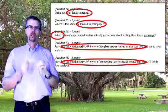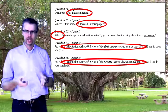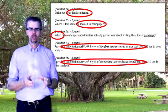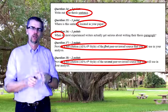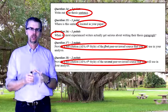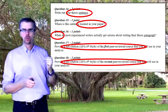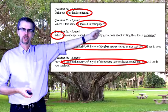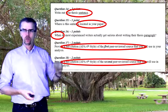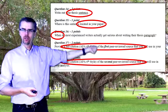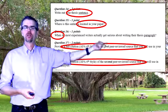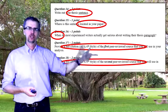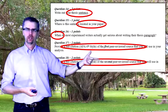Now we come to question 14, which asks you to write out your thesis sentence. I'm still amazed at how many people in a 4000-level course at FAU don't fully understand what a thesis sentence is and where it belongs. So I'm going to give you seven points for writing out your thesis sentence — it is one sentence. Question number 15 asks where the sentence is located in your paper, and I'm going to give you that answer right now: it is the last sentence in your opening paragraph.